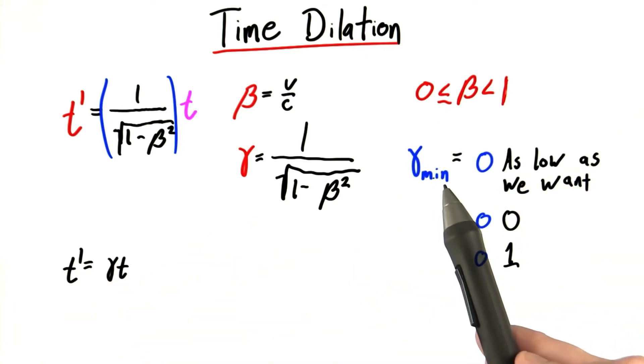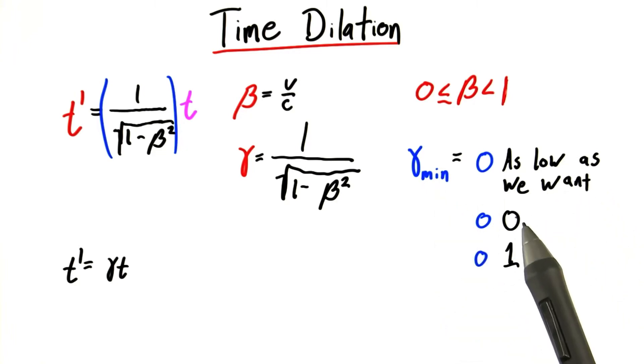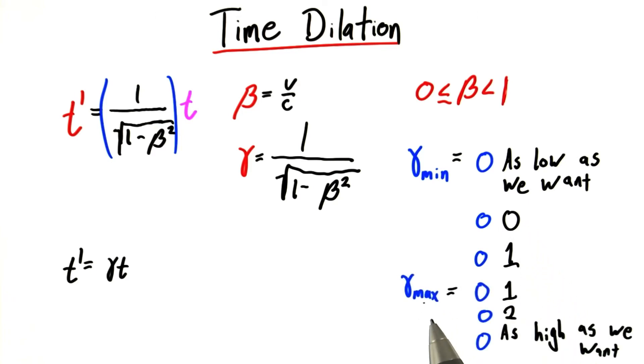So for gamma min, is the lowest possible value of gamma, well, is it as low as we want? Can it go to a negative, a billion? Is the lowest possible value 0, or is the lowest possible value 1? Likewise for gamma max, is the highest possible value that gamma can be, is it 1, 2, or can gamma max grow as large as we want?